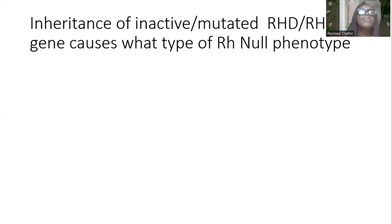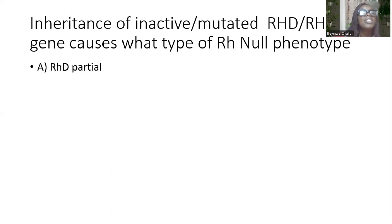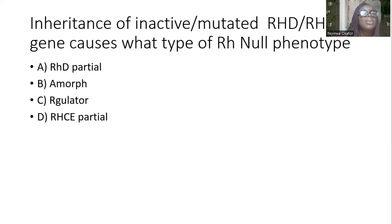Inheritance of an inactive or mutated RHCE gene causes which type of RH-null phenotype? Options are RHD partial, Amorph Regulator, and RHCE partial. And the answer is B — the Amorph type of RH-null phenotype.